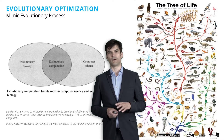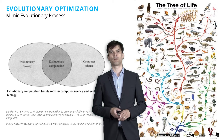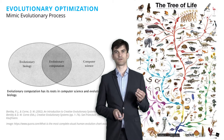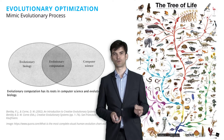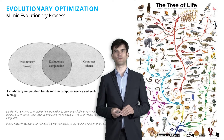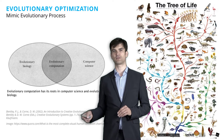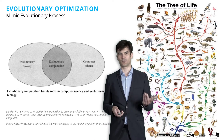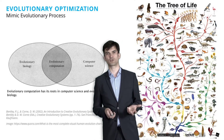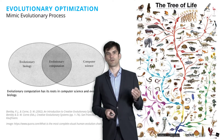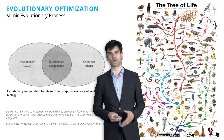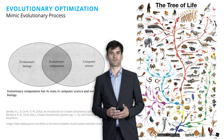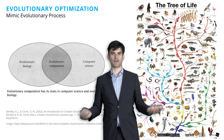In a very abstract way, evolutionary optimization is used to search for good designs that fulfill the requirements that we can formulate. In contrast to biological evolution, where the fitness is formulated not explicitly by some kind of designer, but by the environment.